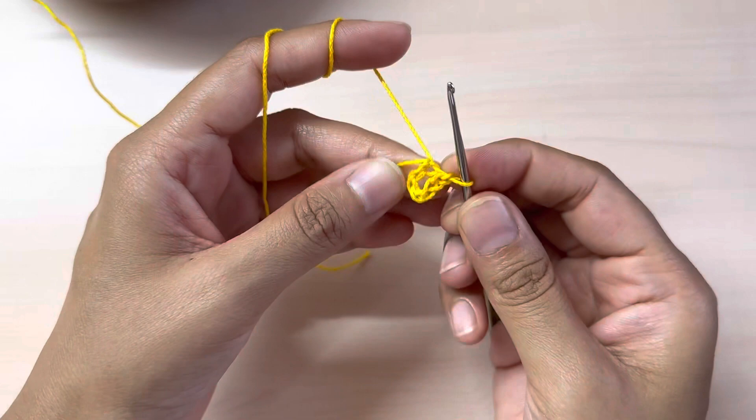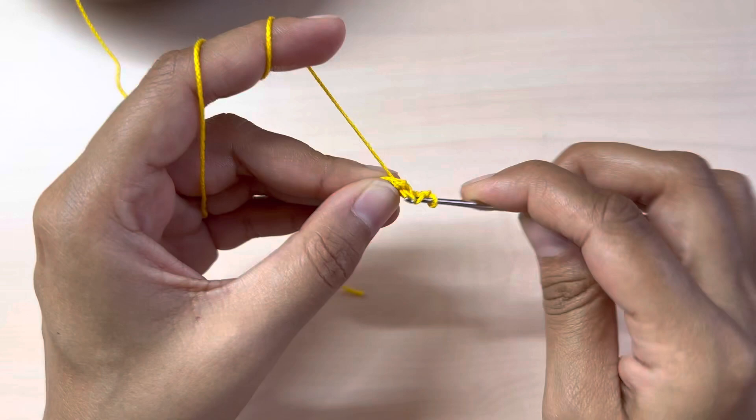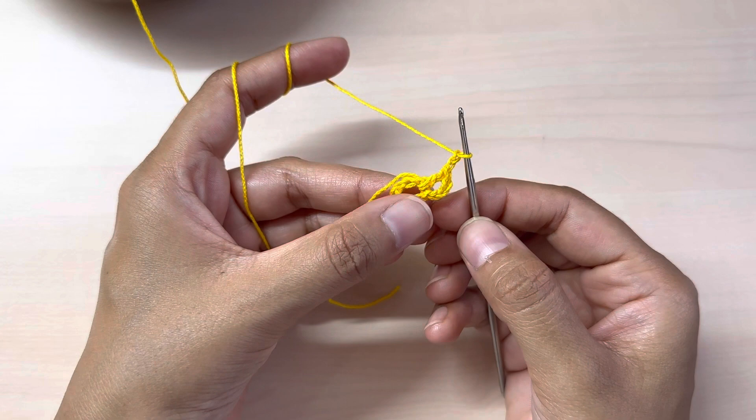Chain three, one two three. This acts as a double crochet. One double crochet into the circle. Chain two.